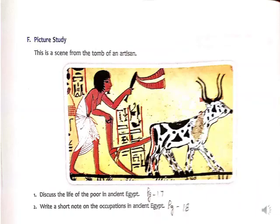This is a picture study which we have to do. It is a scene from the tomb of an artisan — we can see it is a kind of farmer. We have to discuss the life of the poor in ancient Egypt, from page number 17, marked with F1. The poor worked as servants or laborers in rich households. Their houses were very small, consisting of one room, and the poor wore jewelry made of cheap metals.